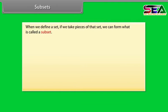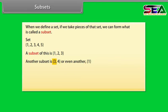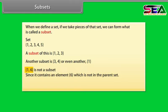Subsets. When we define a set, if we take pieces of that set, we can form what is called a subset. For example, we have the set 1, 2, 3, 4, 5. A subset of this is 1, 2, 3. Another subset is 3, 4. Or even another subset is 1. However, 1, 6 is not a subset since it contains an element 6 which is not in the parent set. In general, A is a subset of B if and only if every element of A is in B.